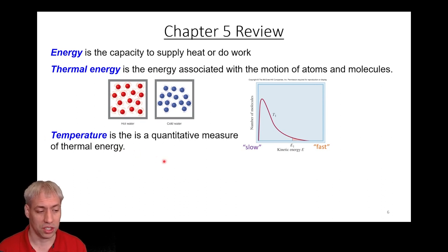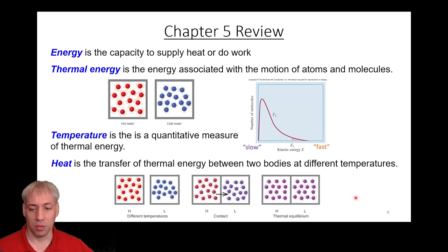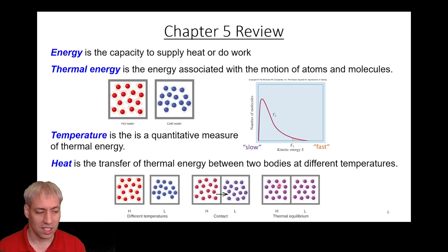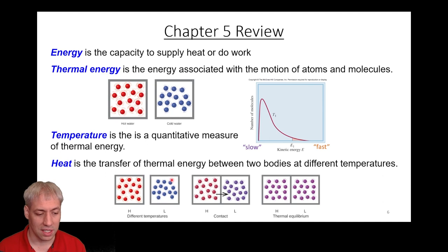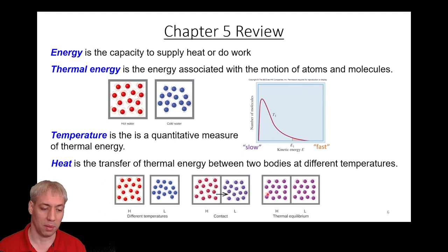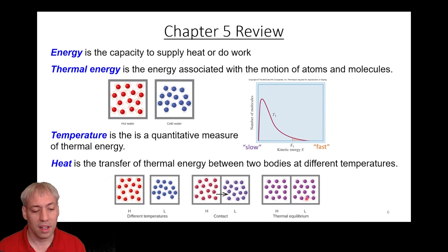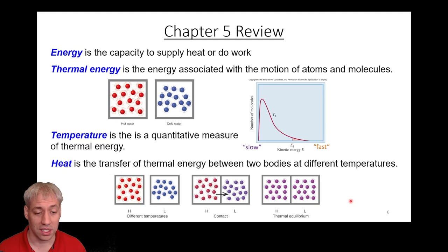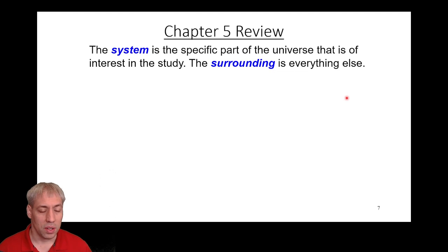We can quantitatively measure thermal energy with a thermometer. One of the things we think about in chemistry is heat: it's not enough to measure the temperature of one system, because you can transition that energy between species. You take something hot and something cold, put them together, and eventually they reach an equilibrium where the temperature on both sides is the same. That idea of transferring energy between two different species is known as heat.